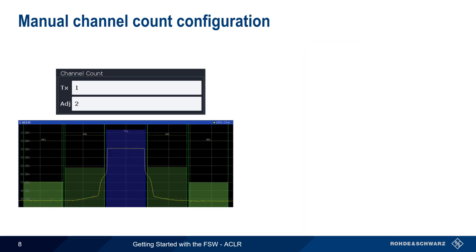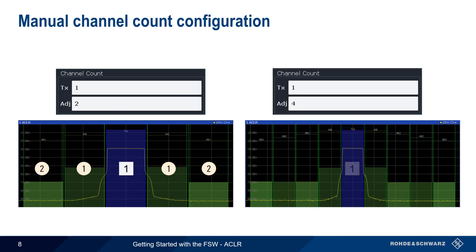A very common channel count configuration is one transmit channel and two adjacent channels. Note that the number of adjacent channels is the same both above and below the transmit channel. For example, if we set the number of adjacent channels to 4, there will be 9 total channel powers measured: 4 channels above the transmit channel and 4 channels below the transmit channel.